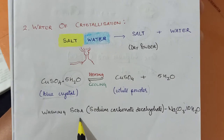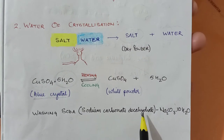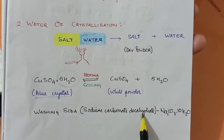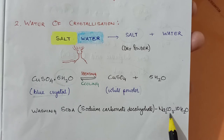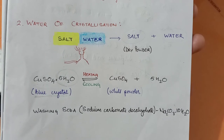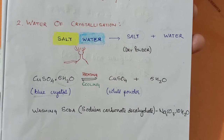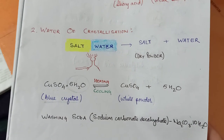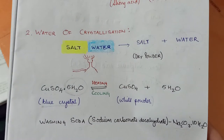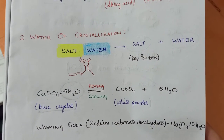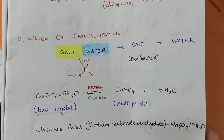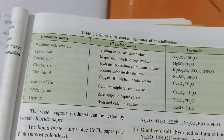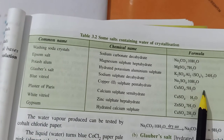Another example is washing soda, which is sodium carbonate decahydrate. Deca means 10, hydrate means water — so sodium carbonate with 10 molecules of water, Na₂CO₃·10H₂O. There are other different examples in your book, and I suggest you go through each one and learn their common name, chemical name, and their formulas.